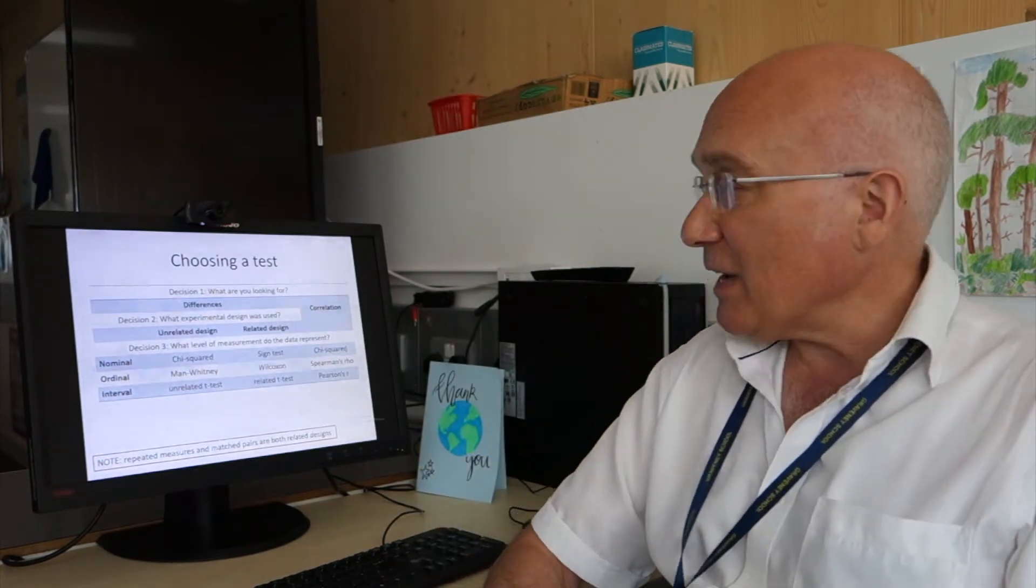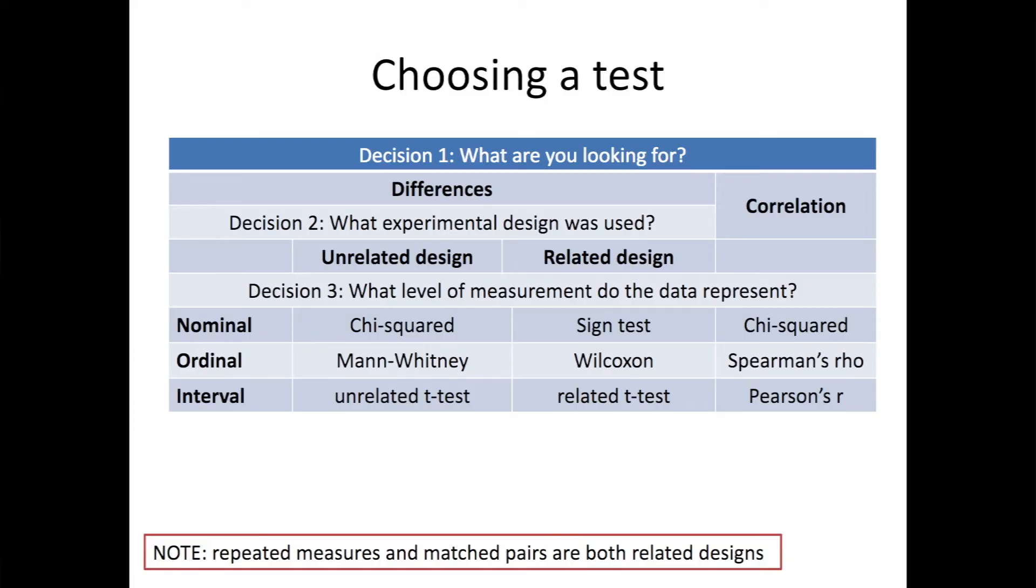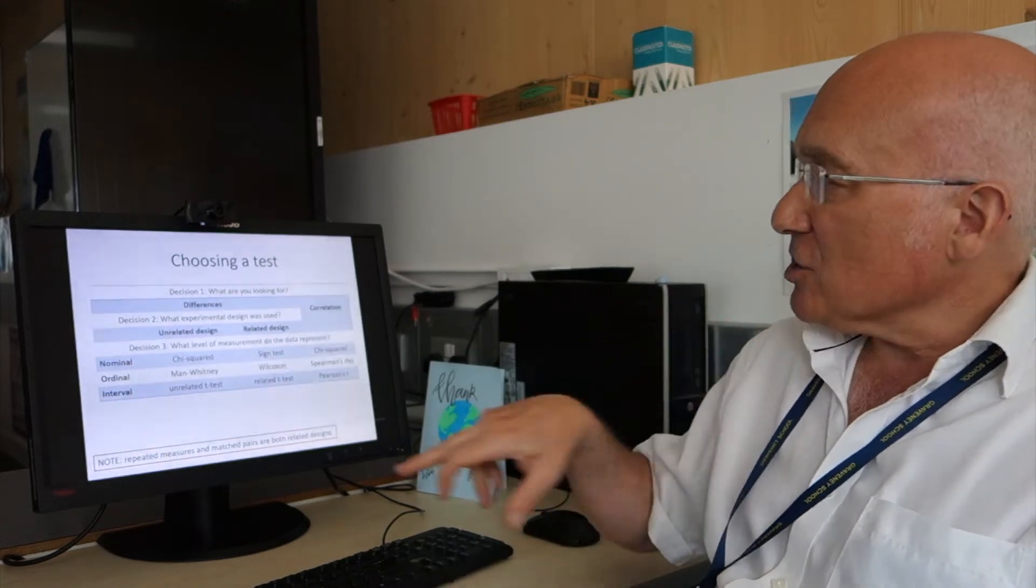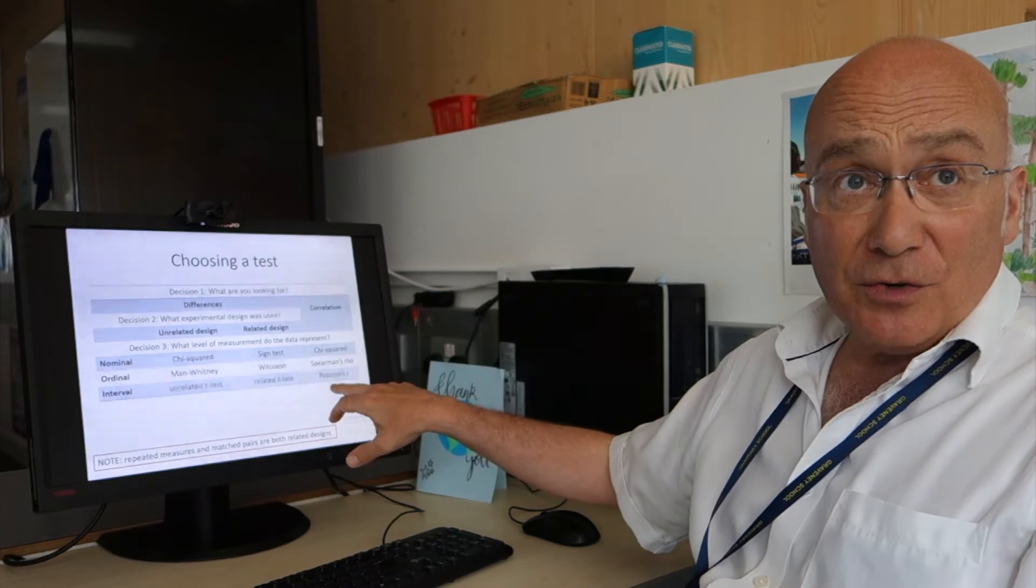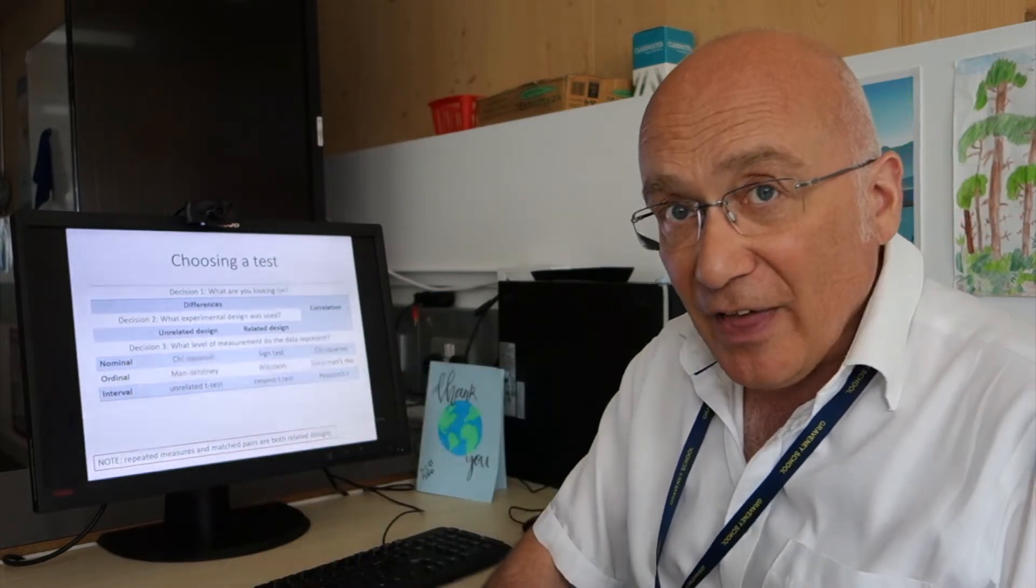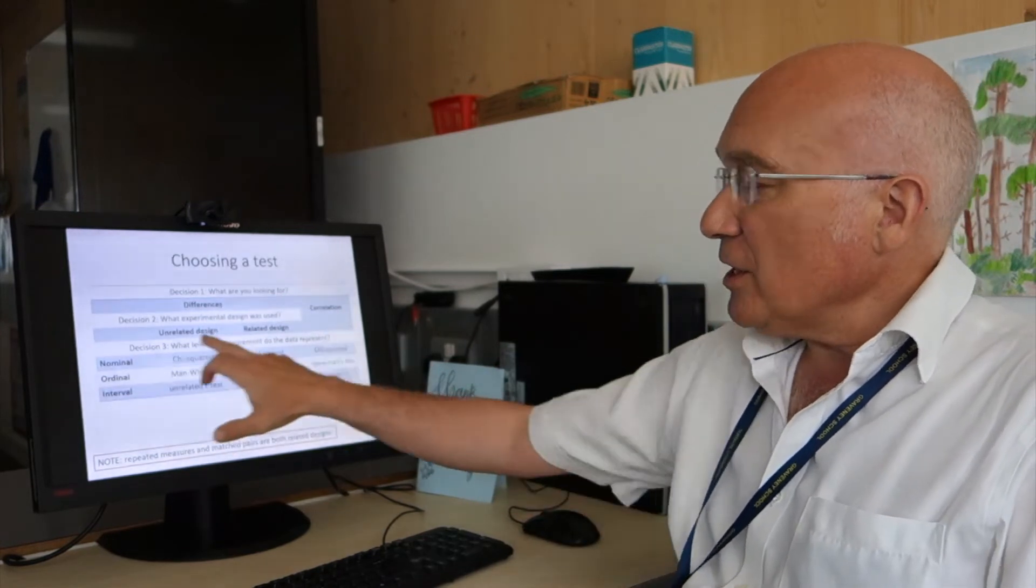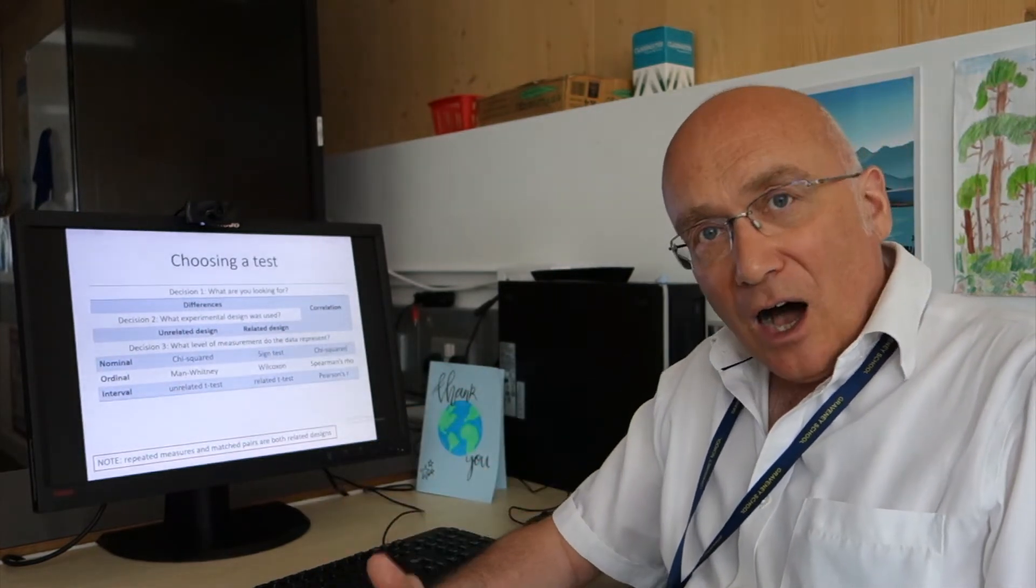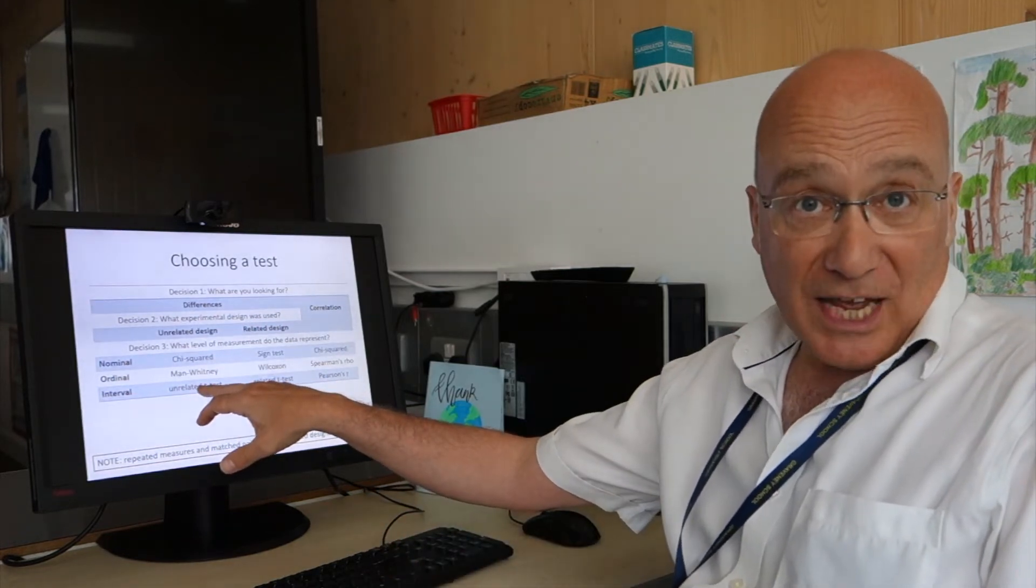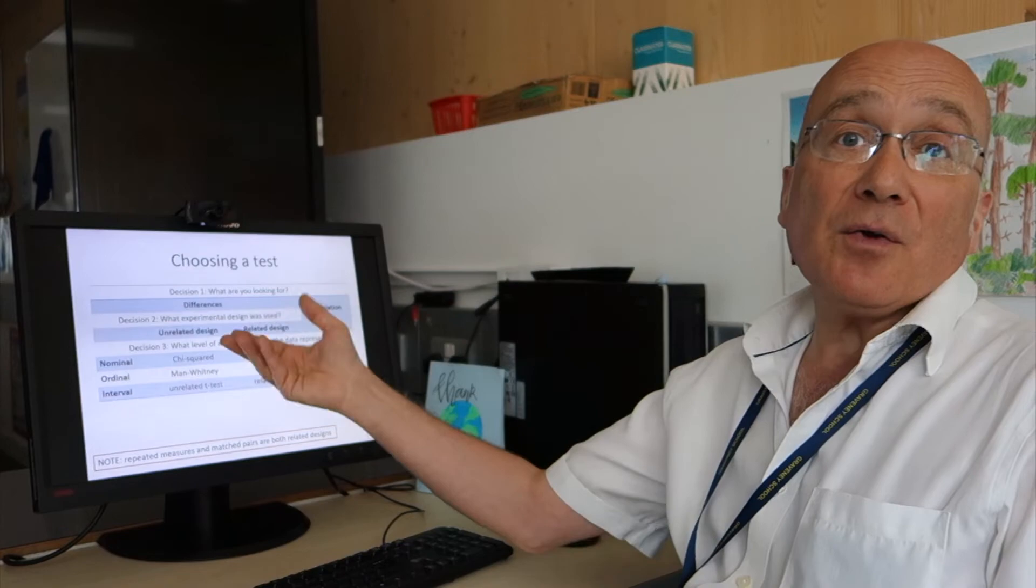The third decision we have to make is what level of measurement do the data represent? Have we got nominal, ordinal or interval data? And when we know those three things, we can simply choose which statistical test we need according to this grid. You need to learn that. You do need to learn that and you can and will get asked a question where you have to name a statistical test that you could use and say why it's appropriate.